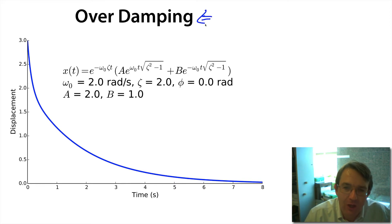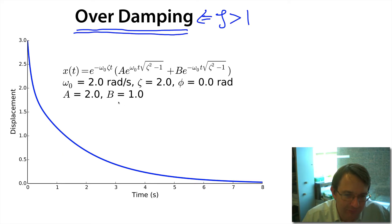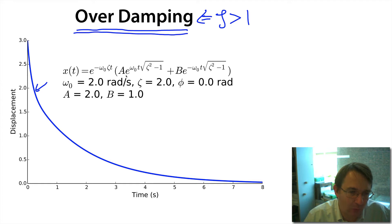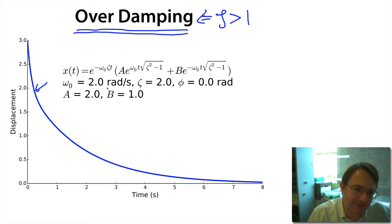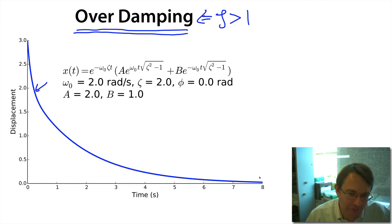We call this type of damping overdamping — this is the case when the damping ratio zeta is greater than one. As you can see from the plot, for some example values of omega-naught, zeta, a, and b, we end up with an exponentially decaying curve. There is a little kink where you switch over from the very steeply falling exponential to the more slowly falling one; where that kink occurs depends on your exact values of zeta and omega-naught. There are no oscillations — it's just an exponential decay of the mass back to the equilibrium position.